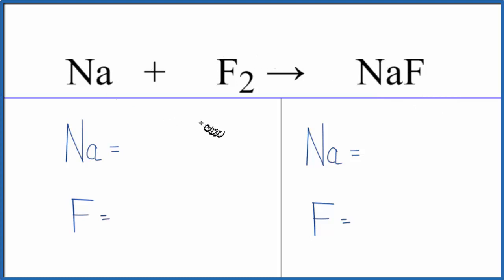First, we need to count the atoms on each side. On the reactant side, we have one sodium and two fluorine atoms. On the product side, one sodium and one fluorine.